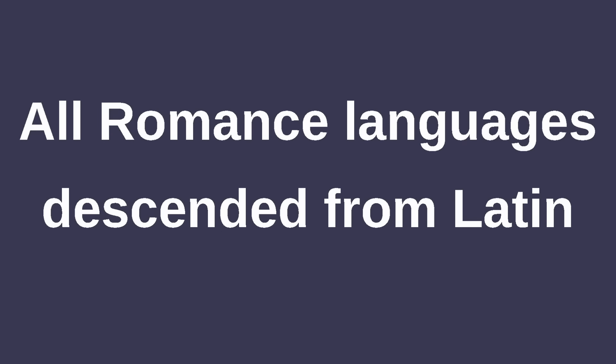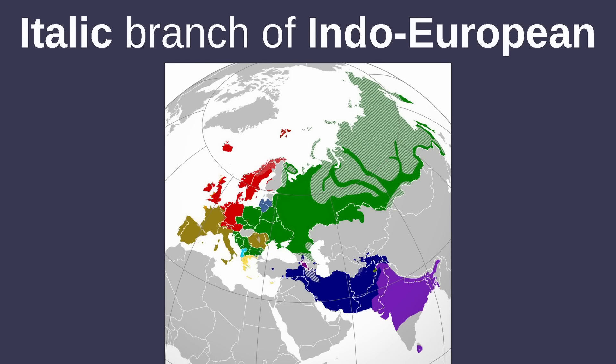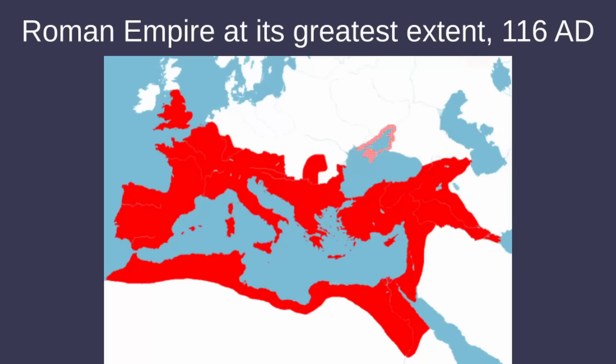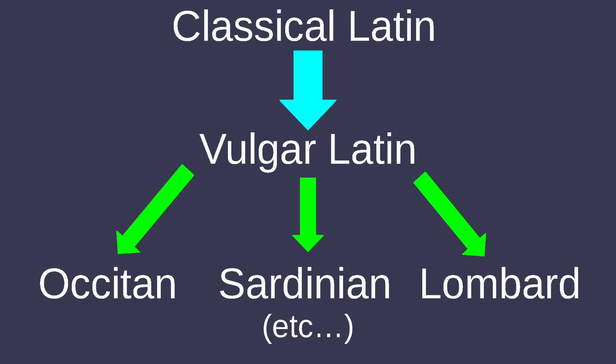All Romance languages are descended from Latin, which was in turn part of the Italic branch of Indo-European, and was the main language of this obscure nation you might have heard of — it was called the Roman Empire. In the centuries following its collapse, Classical Latin evolved into various forms of Vulgar Latin, which then evolved into the Romance languages we know today.